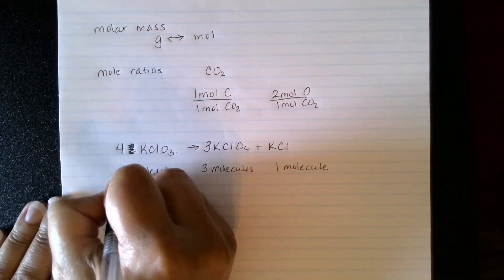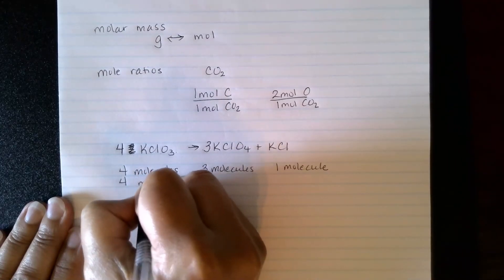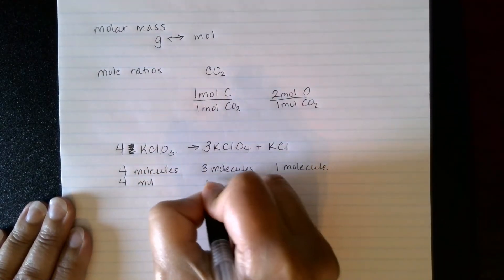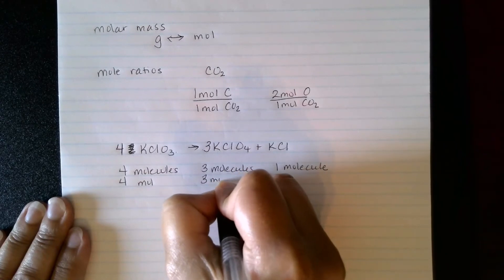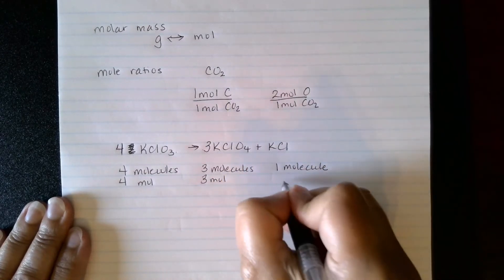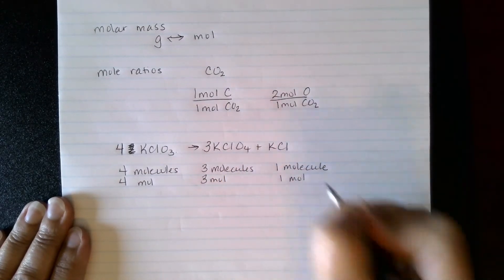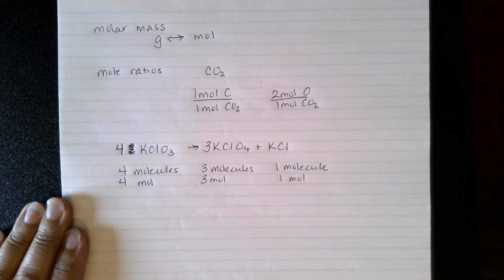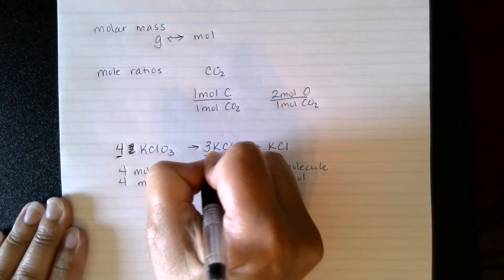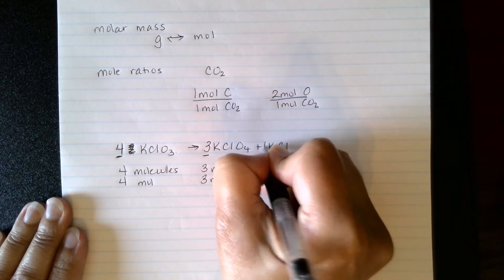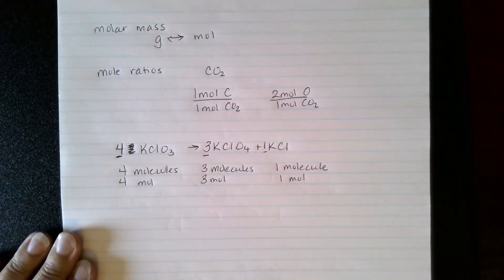It also tells me that if I have four moles of the KClO3, I can produce three moles of KClO4 and one mole of KCl. So I can use these coefficients to write those as mole ratios.